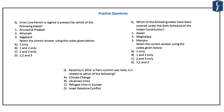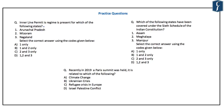Let us answer today's questions. Question 1: The Inner Line Permit regime is present for which of the following states — Arunachal Pradesh, Mizoram, and Nagaland? All three are included, so the correct answer is D, all of 1, 2 and 3. Question 2: Which states are covered under the Sixth Schedule of the Indian Constitution? The four states are Assam, Meghalaya, Mizoram and Tripura — Manipur is not included — so the correct answer is B, 1 and 2 only. Question 3: The 2019 Paris Summit is related to which of the following? The correct answer is B, the Ukrainian crisis. With this, we conclude today's discussion.